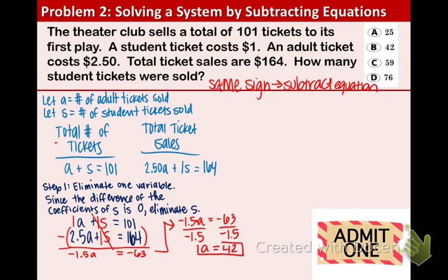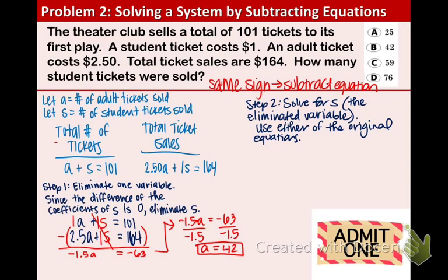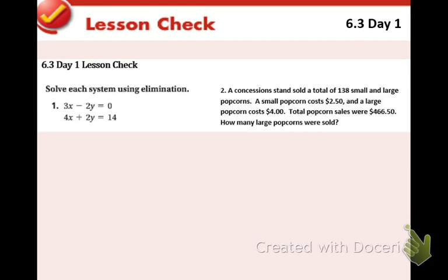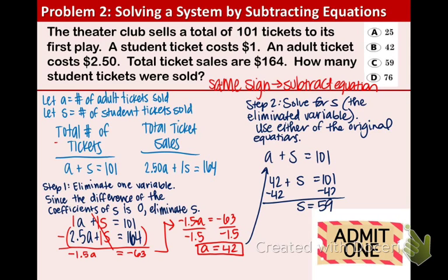Now we want to find out how many student tickets were sold. We solve for S using one of the original equations — preferably the easier one. The first equation, a plus S equals 101, is obviously easier. We plug in 42 for a, then subtract 42 from both sides to isolate S, and we find that S equals 59. So there were 59 student tickets sold.